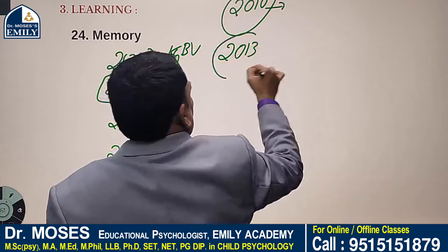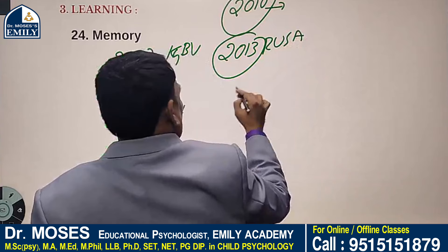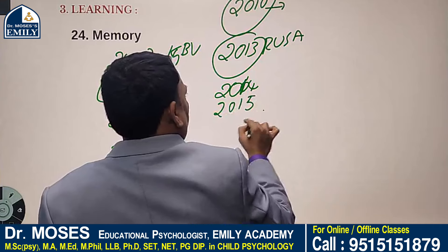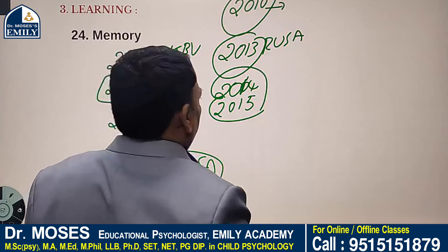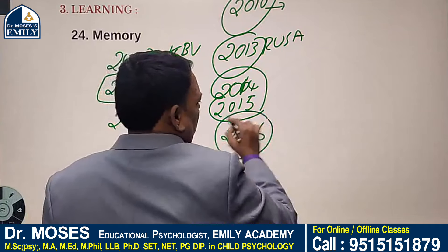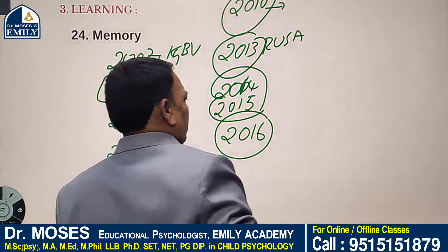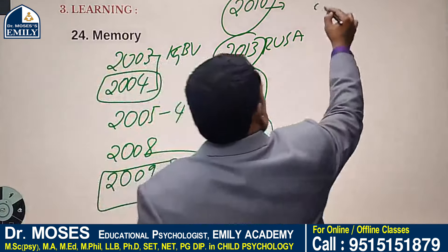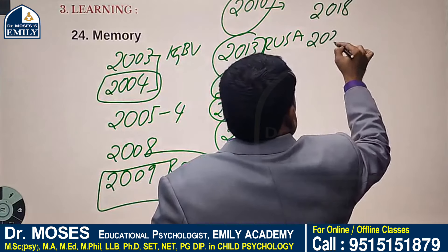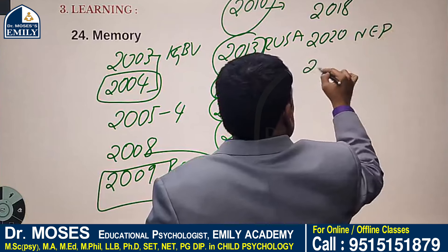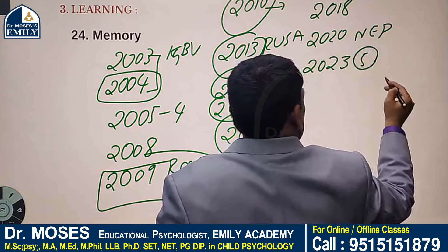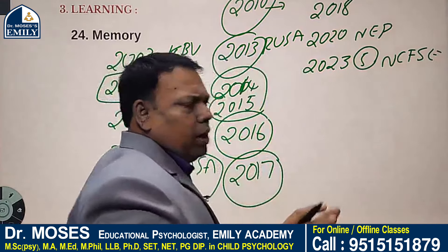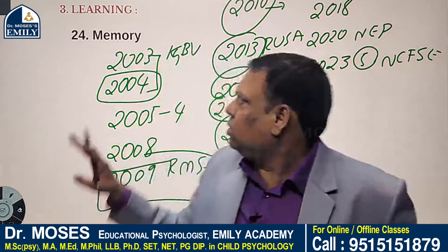2013: Rashtriya Uchchatar Shiksha Abhiyan. 2014–2015: Beti Bachao, Beti Padhao; Padhe Bharat, Badhe Bharat. 2016: TSR Subramanian Committee Report. 2017: National Testing Agency was started. 2018: Samagra Shiksha Abhiyan. 2020: National Education Policy. 2023: the 5th National Curriculum Framework — the National Curriculum Framework for Secondary Education. These are the important milestones in the history of Indian education. This is memory power.